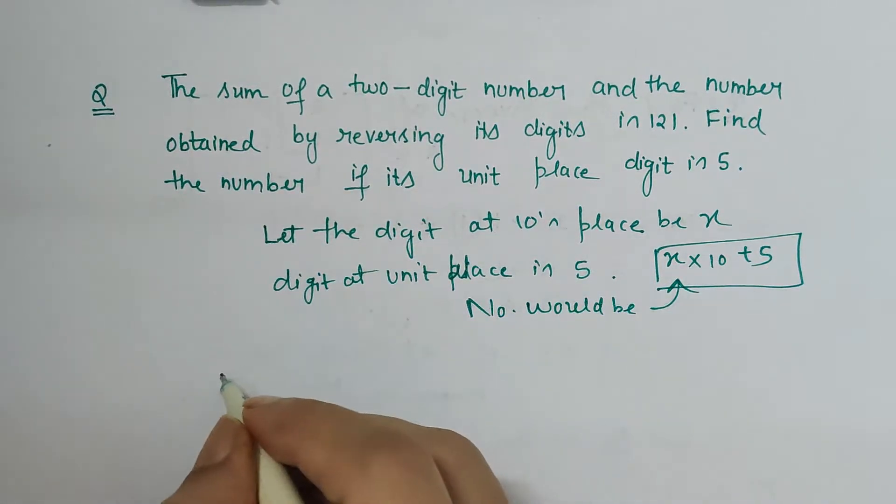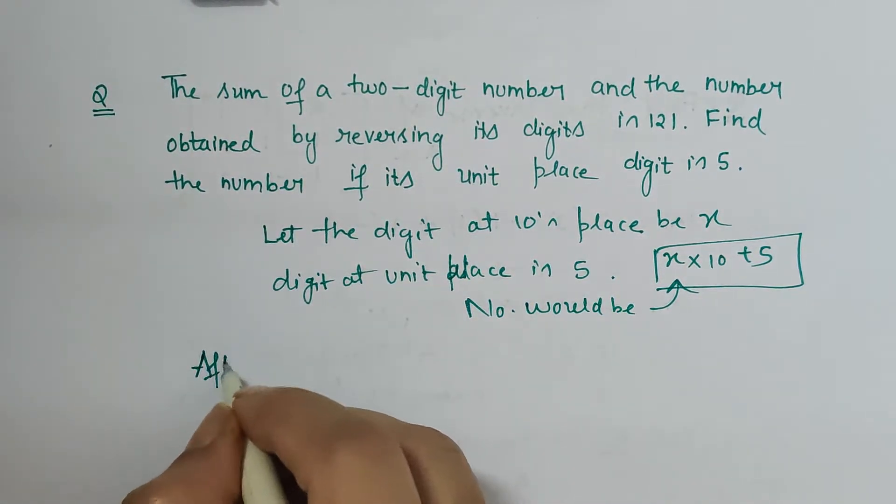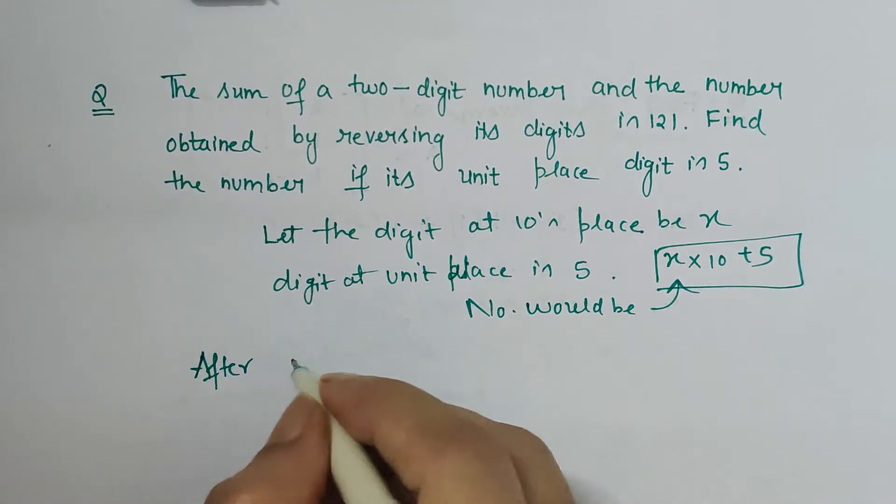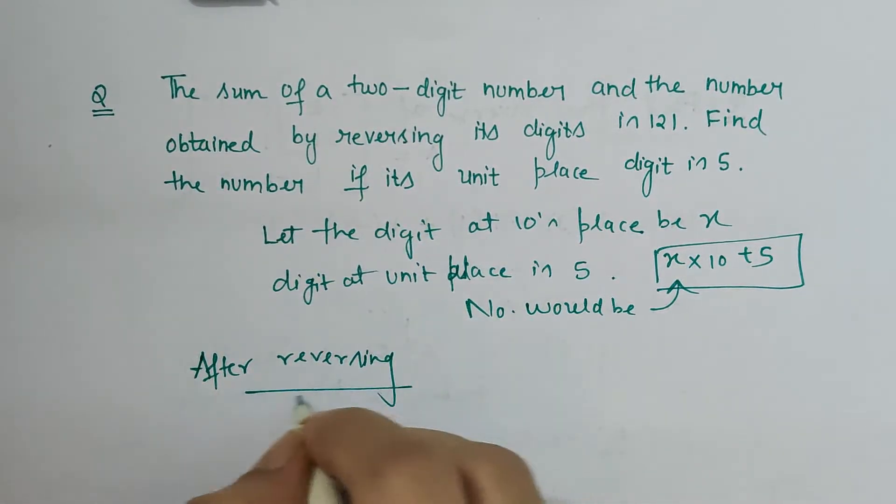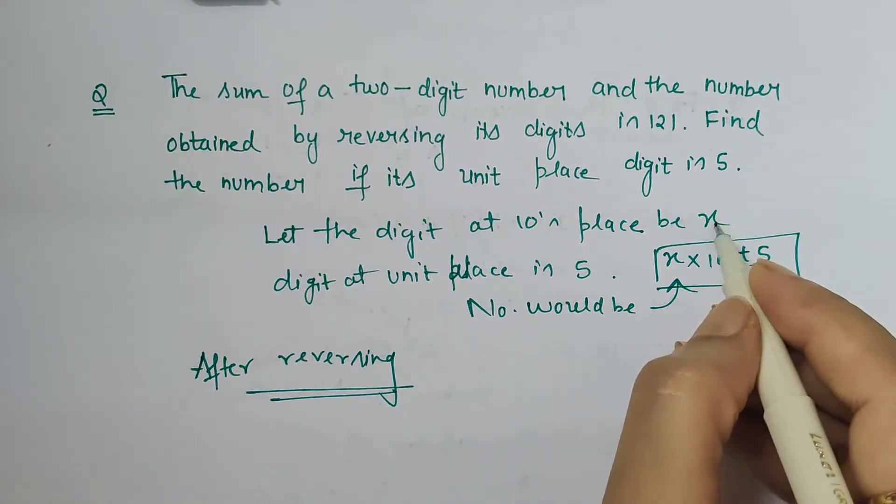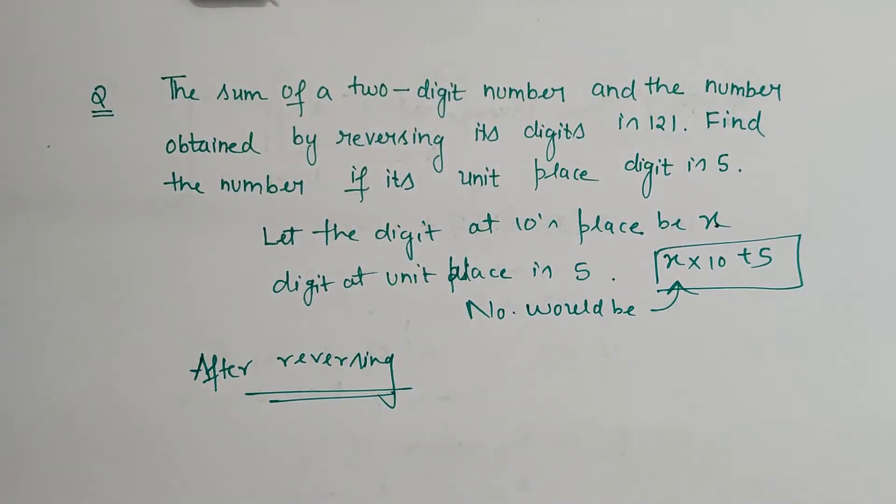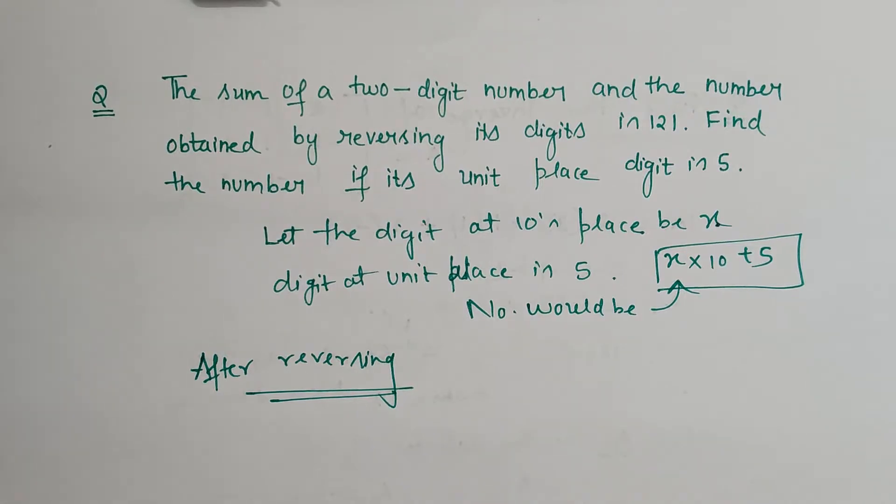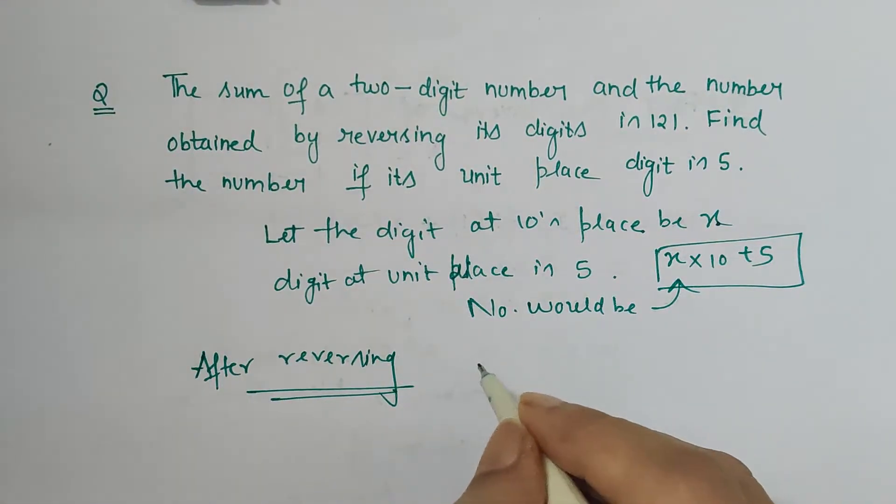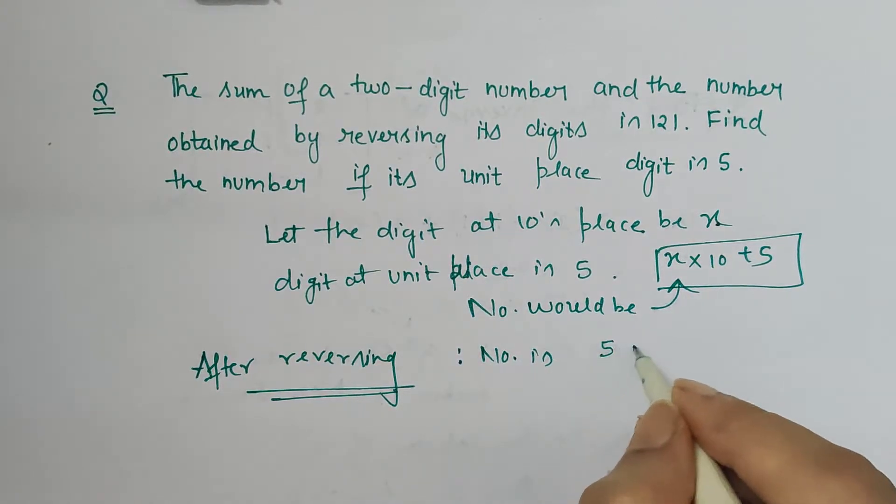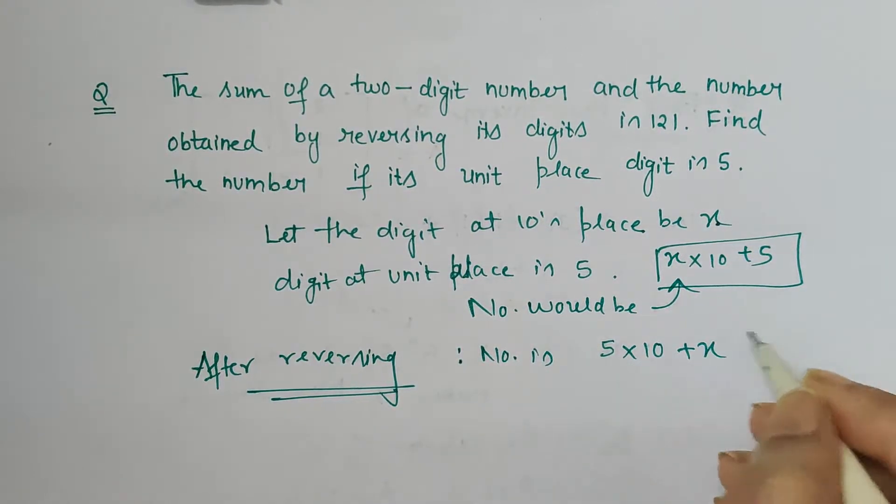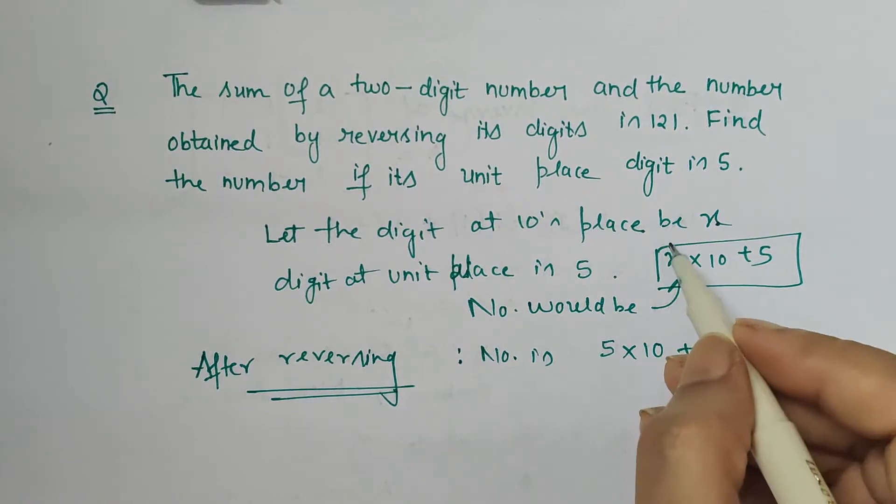Now after reversing, when the number is reversed what will happen? This x will come at units place and the 5 will come at tens place. So after reversing, number is 5 into 10 plus x because now this x is at unit place.